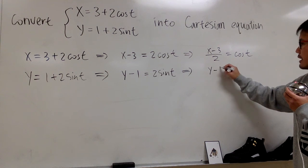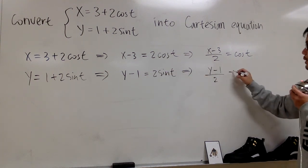And then divide both sides by 2. So we have y minus 1 over 2, and that will give us sine t.